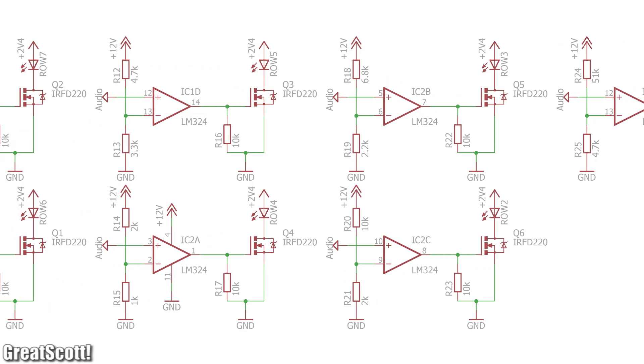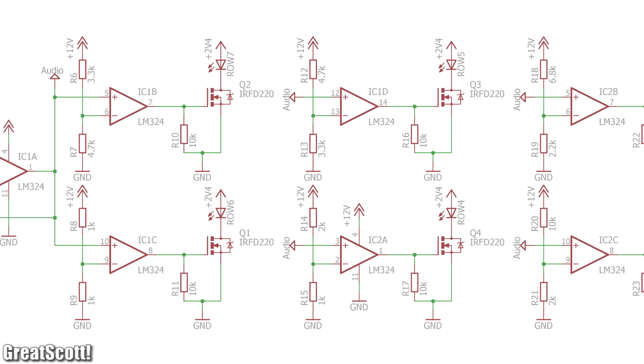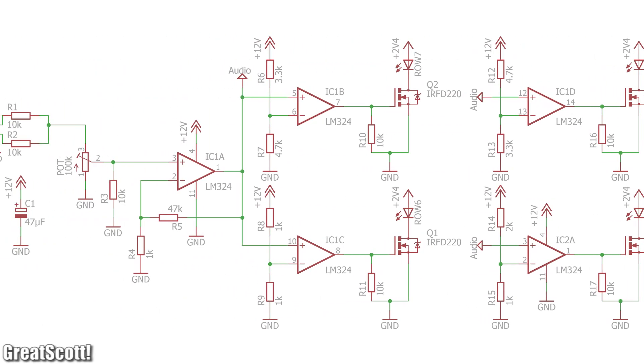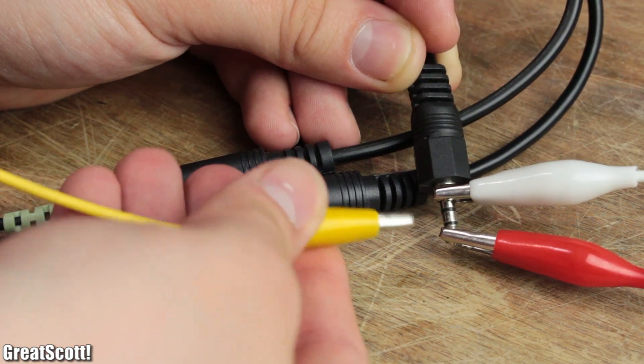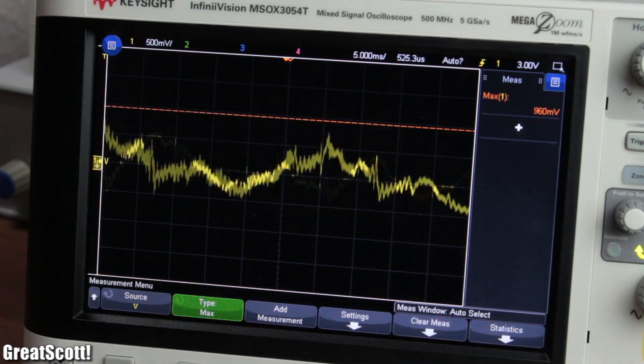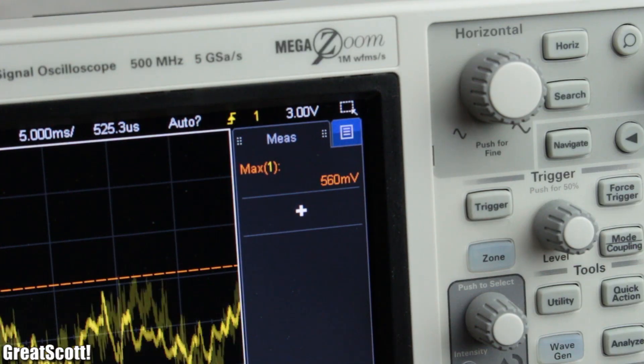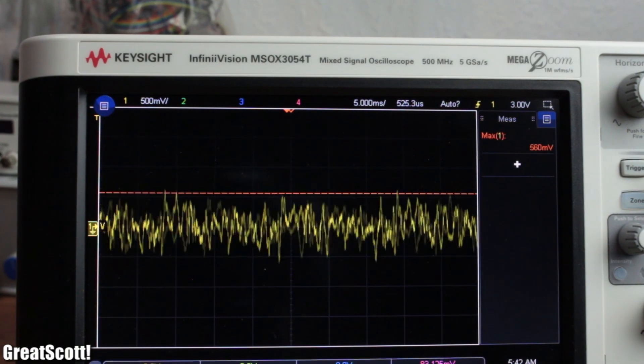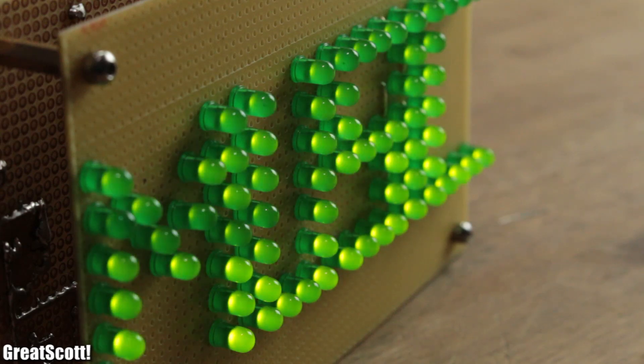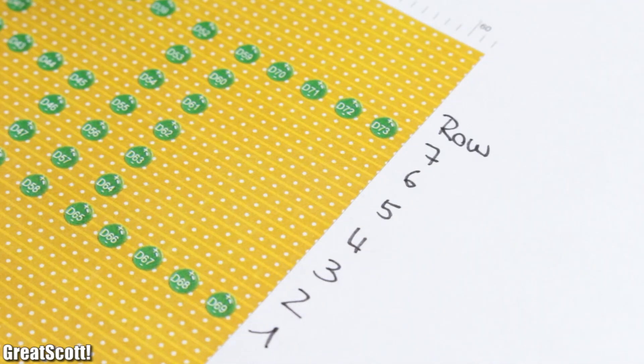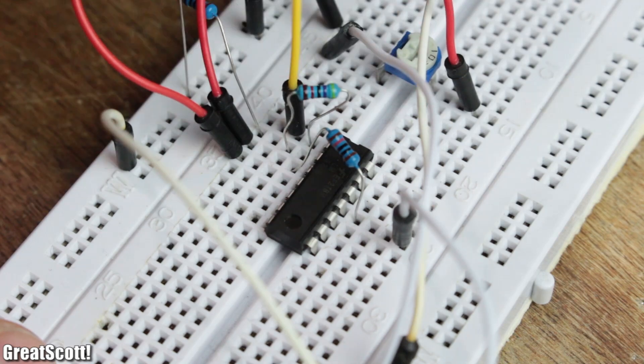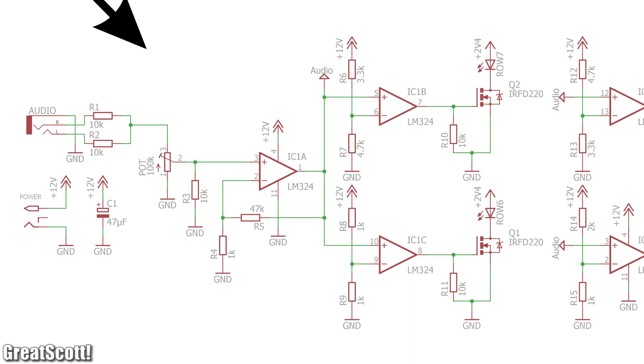This is the schematic that I came up with. Looks confusing at first, but let me explain. The main input signal will be the AC voltage of a 3.5 millimeter jack which produces maximum voltage peaks of around 1.3 volts. That is quite low if we want to distinguish between seven threshold values for the seven rows of the LED sign. That is why the signal gets amplified with a non-inverting op-amp configuration.